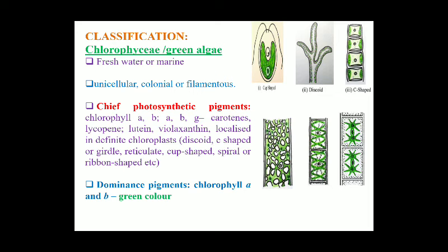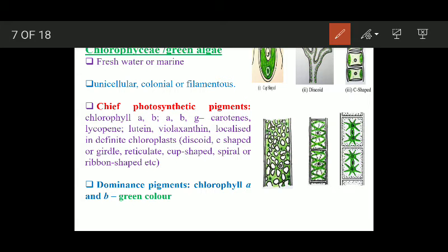The dominant pigments in this group include chlorophyll a and chlorophyll b. The group possesses a number of pigments, but chlorophyll a and chlorophyll b are the dominant pigments, and because of their dominance this group exhibits a green color.